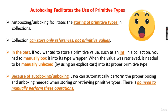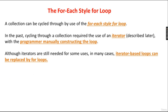Autoboxing and unboxing facilitate the storing of primitive types in collections. Collections can store only references, not primitive values. In the past, if you wanted to store a primitive value such as an integer in a collection, you had to manually box it to its type wrapper, and when the value was needed it had to be manually unboxed by casting it to its proper primitive type. With autoboxing and unboxing, Java can automatically perform the proper boxing and unboxing needed when storing or retrieving primitive types — there is no need to manually perform this operation.